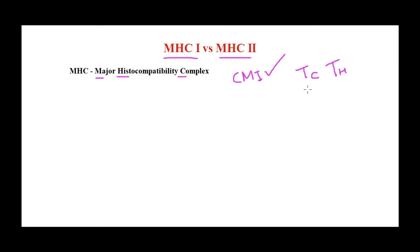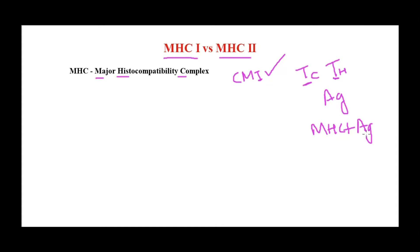MHC molecules are very important to provoke cell-mediated immunity — that is, the cytotoxic T cells and T helper cells. The T cell itself cannot recognize the antigen alone; it is kind of blind towards the antigen alone. The antigen, or rather the peptide, has to be presented along with the MHC molecule. So T cells recognize only the MHC plus the antigenic peptide combination.